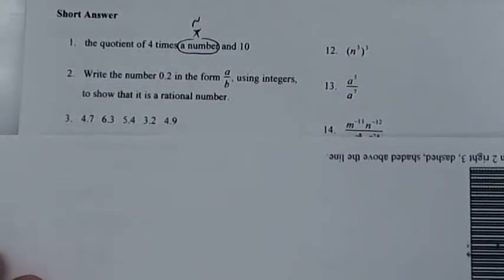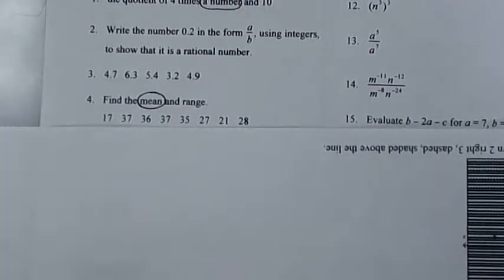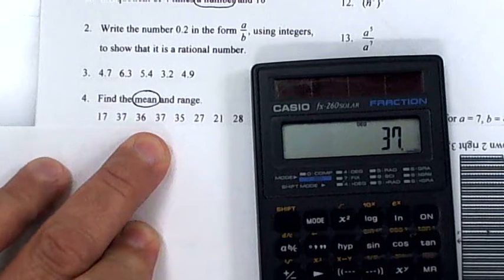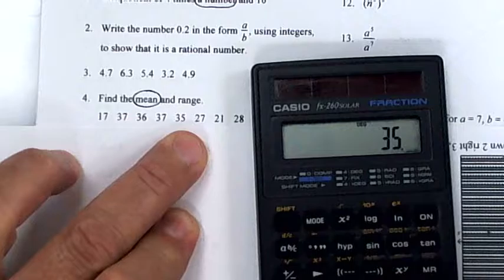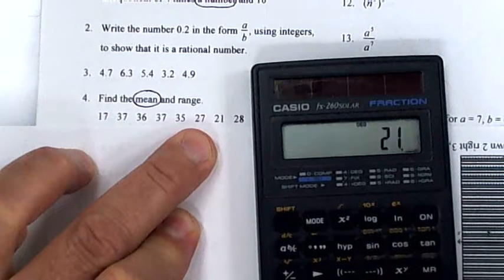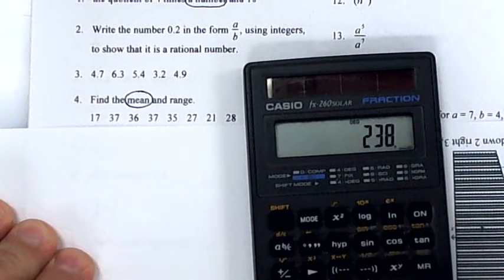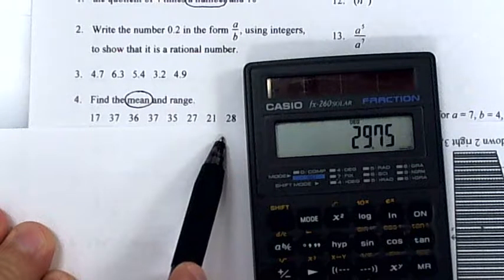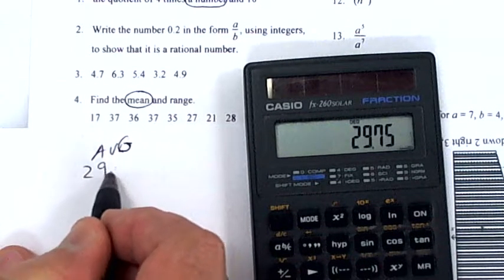The next one says find the mean. Add them all up: 17 + 37 + 36 + 37 + 37 + 27 + 21 + 28 — that's eight numbers. Press equals and divide by 8. The mean or average is 29.75.